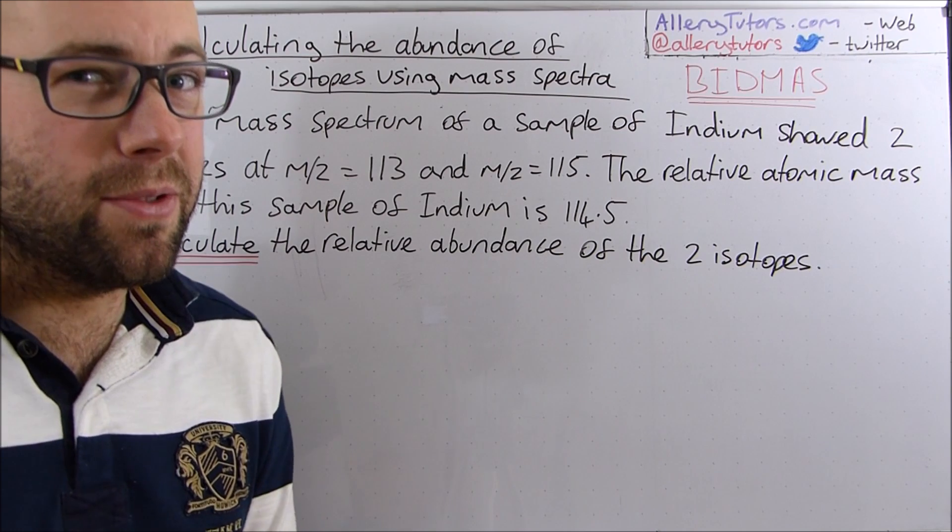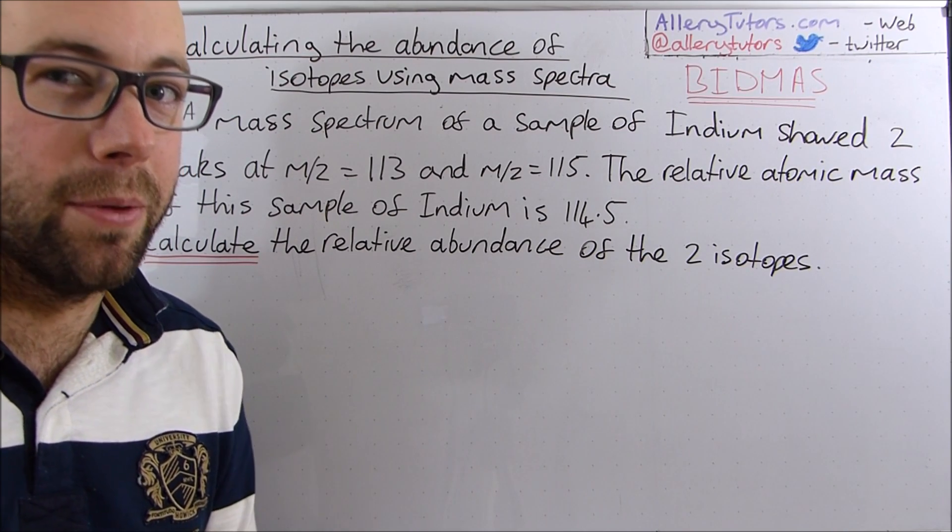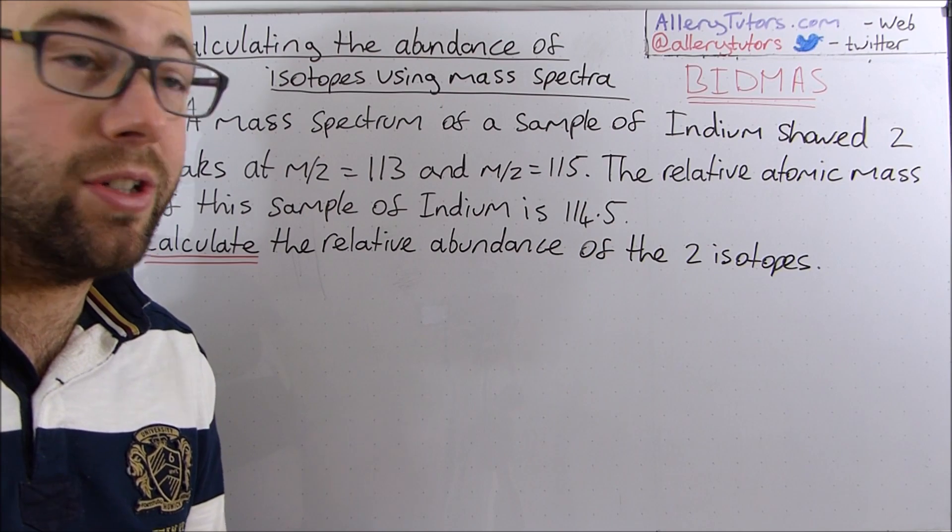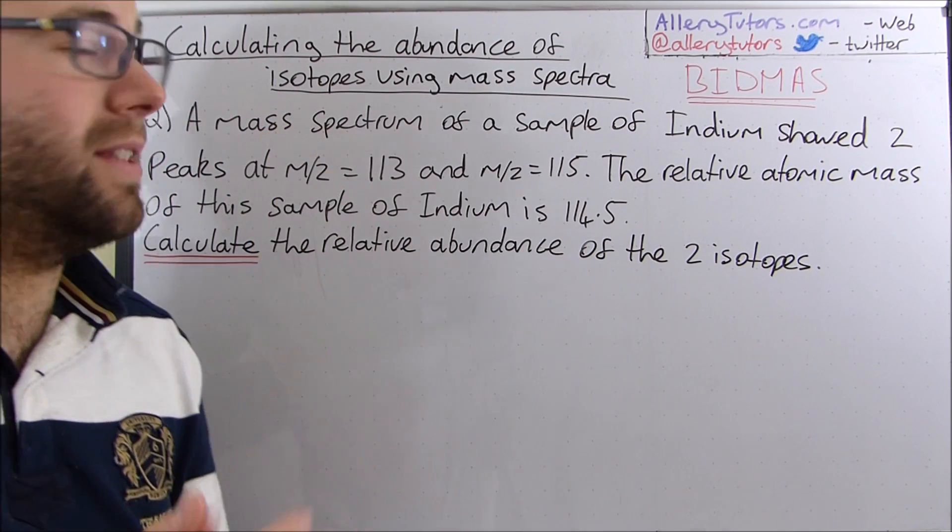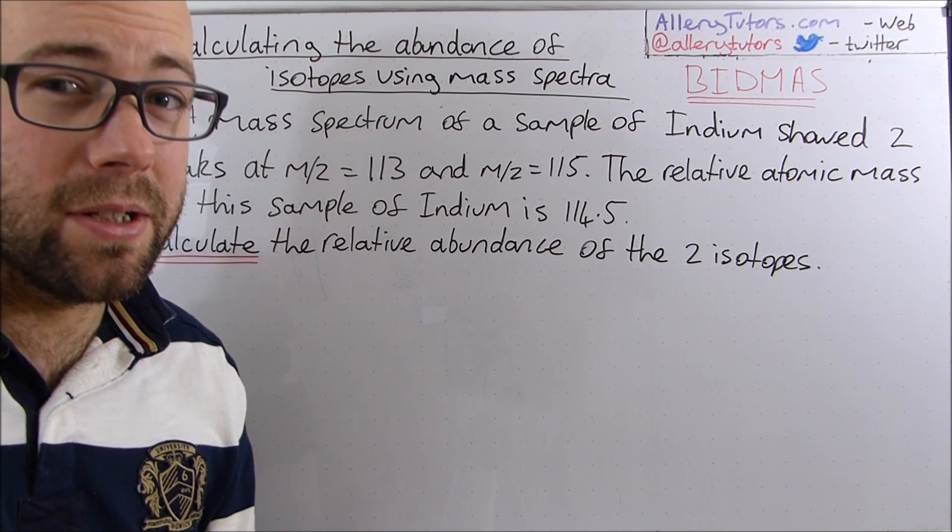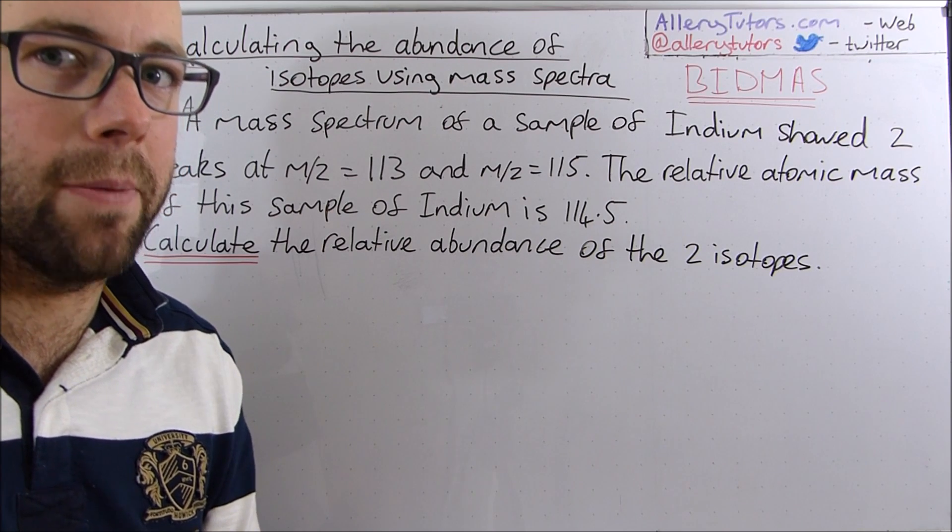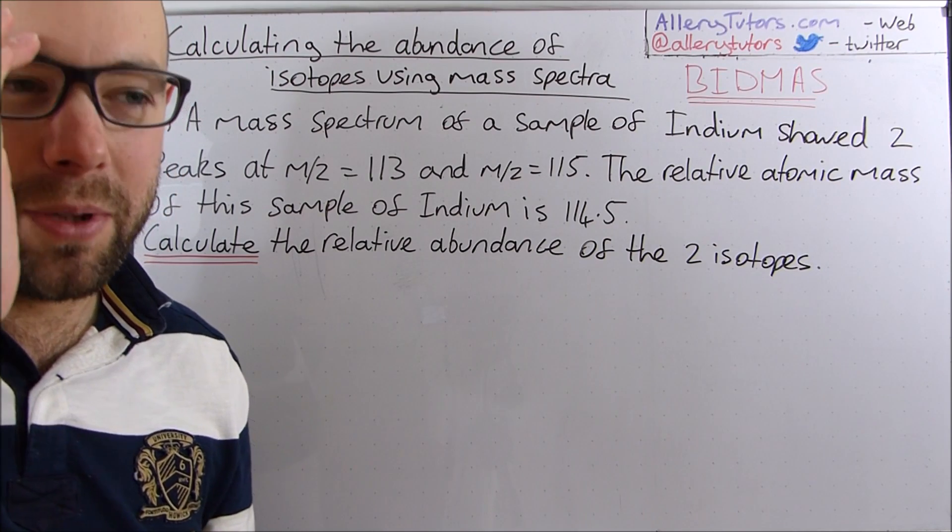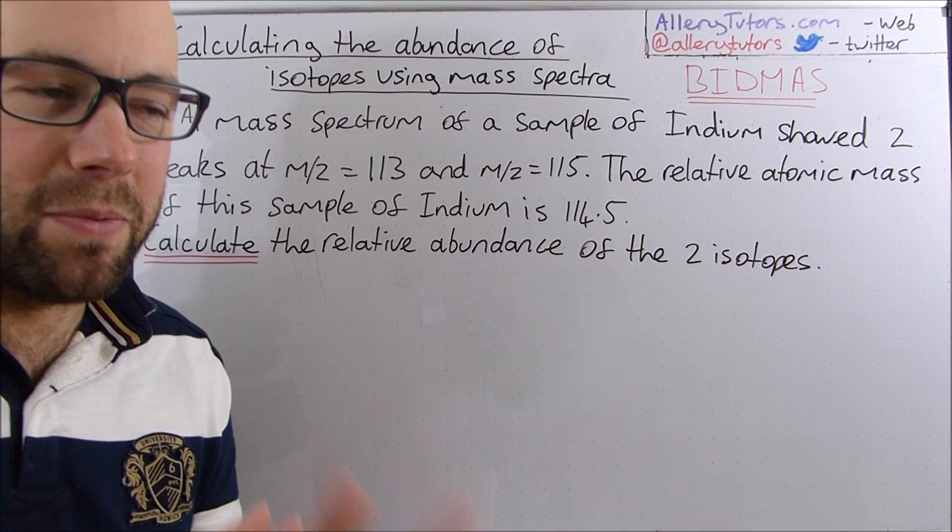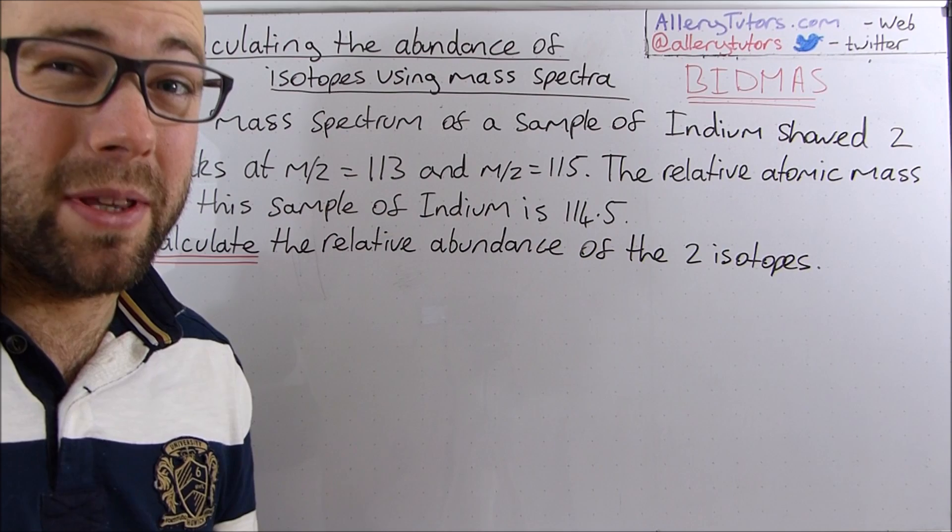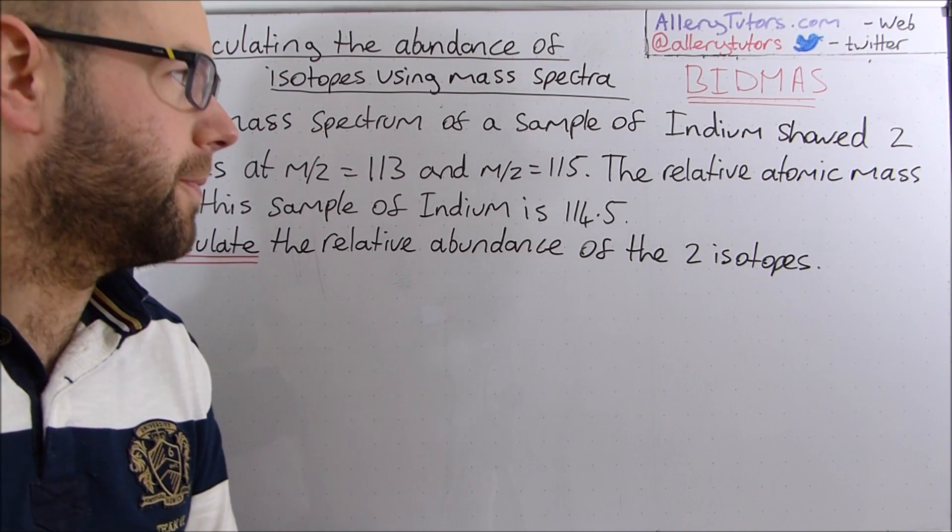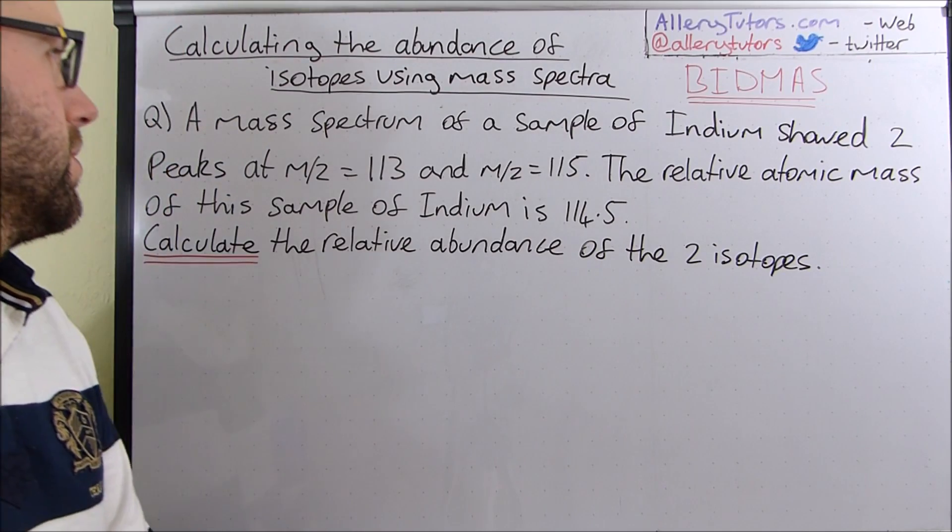In this video we're going to go through a worked example, but this video is going to be slightly different because we're actually going to calculate the abundance of the isotope rather than identify what the element is, and these are a little bit trickier. There's a bit of algebra in here so I'm going to show you the simplest way that I know to work these things out.